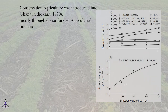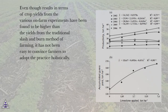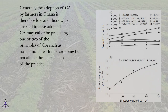Conservation Agriculture was introduced into Ghana in the early 1970s, mostly through donor-funded agricultural projects. Even though results in terms of crop yields from the various on-farm experiments have been found to be higher than yields from the traditional slash-and-burn method, it has not been easy to convince farmers to adopt the practice holistically. Generally, adoption of CA by farmers in Ghana is low, and those who have adopted CA may be practicing only one or two principles such as no-till or no-till with intercropping.